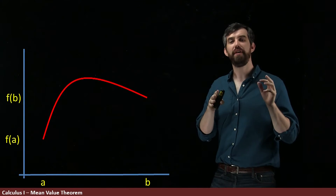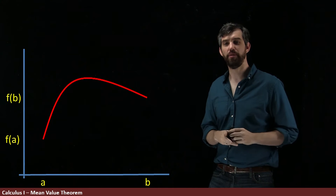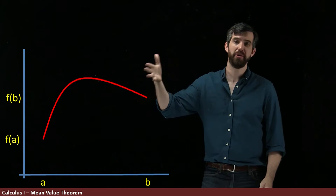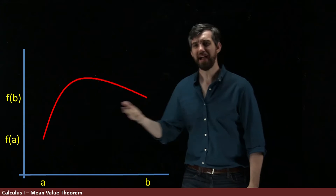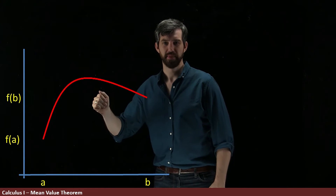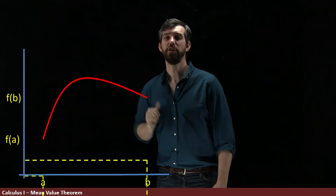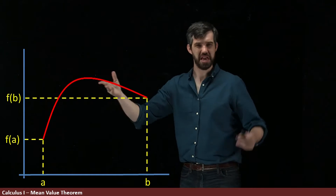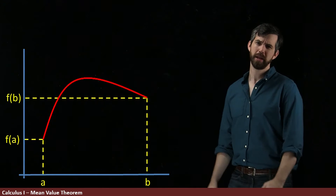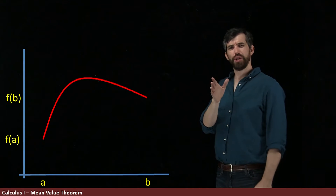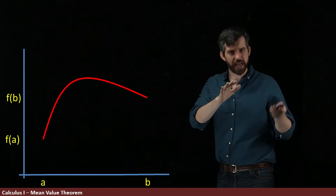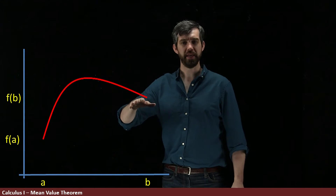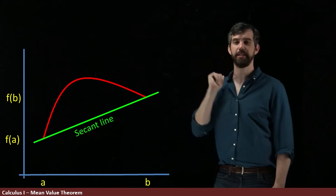In this video, we're going to talk about a very interesting theorem called the Mean Value Theorem — a theorem that is actually very intuitive. Imagine a function where we have some point a, f(a) and some point b, f(b) — two endpoints specified on the curve. The secant line between the point (a, f(a)) and the point (b, f(b)) looks like that. That's a secant line.